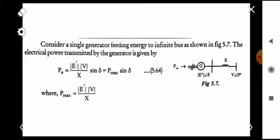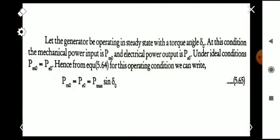We are considering a single line diagram with a single generator feeding energy to an infinite bus. The electrical power transmitted by the generator can be written using the power angle equation: P = (|E| × |V|) / X × sin(δ). Since |E||V|/X equals maximum power Pmax, this simplifies to P = Pmax × sin(δ). Let the generator operate in steady state with a torque angle δ₀, where mechanical power input is Pm0.